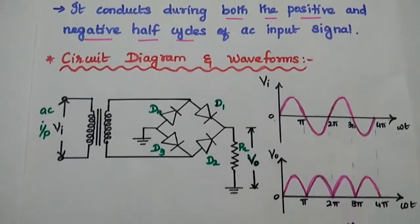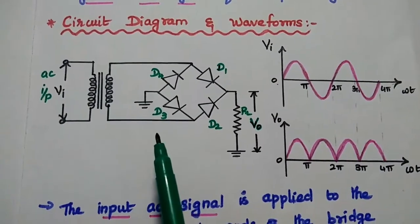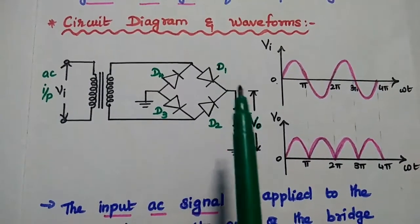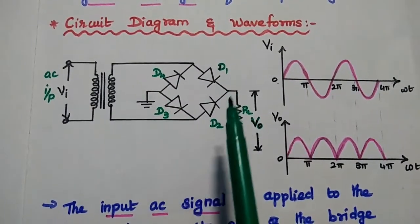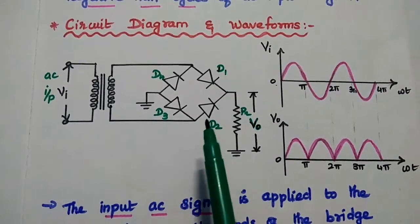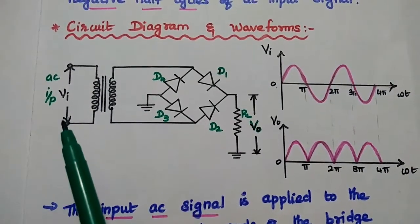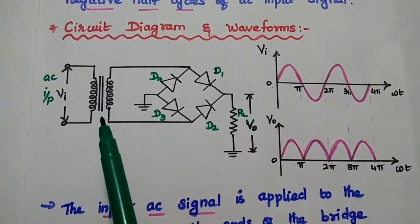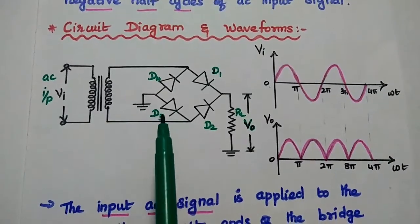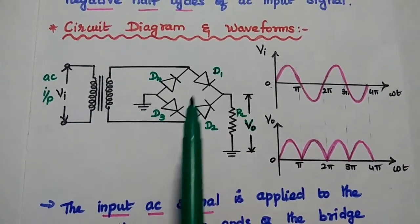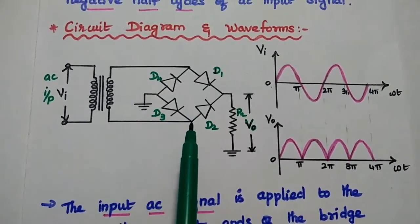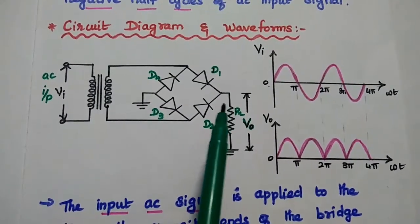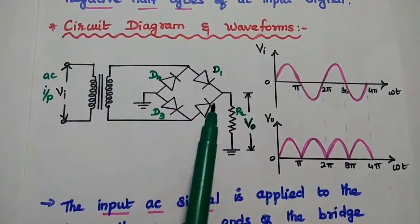This is the circuit diagram of bridge rectifier. Diodes D1, D2, D3, and D4 form a bridge circuit. The AC input signal is given to the primary winding of the transformer. The input AC signal is then applied to the diagonally opposite ends of this bridge circuit, and the load resistance RL is connected between the other two diagonal ends of this bridge circuit.